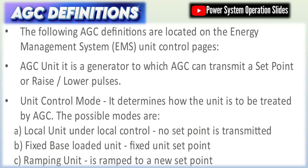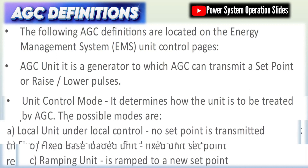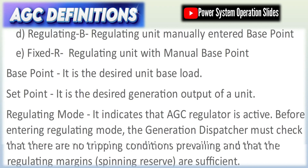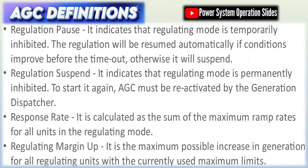including centralized control, decentralized control, and distributed or hierarchical control systems. Centralized AGC involves a single control center managing the generation of multiple units, while decentralized systems allow local control with minimal central coordination. Distributed control, often used in large or smart grid systems, integrates both local and central decision-making layers.